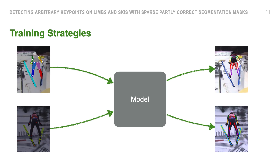Another problem is that we can only use a few images, as we only have a few images with segmentation masks available. Therefore we use a combined training strategy. For images with segmentation masks, we train on the arbitrary key points. For the other images where we only have standard key points and no segmentation masks, we also use them for training — using just the standard key points themselves, but we can also train on the intermediate key points that lie on the straight line.